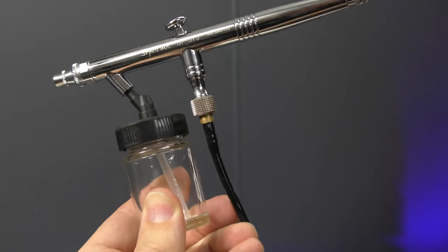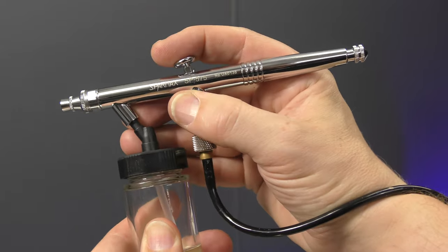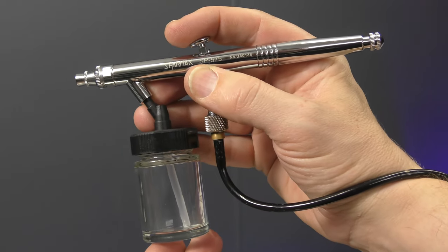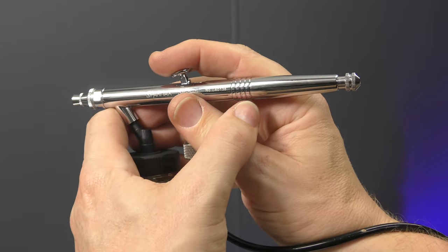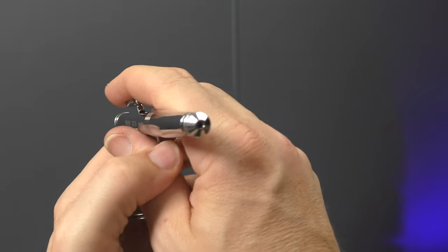And now with the suction feed brush, same deal. I hook that hose around my wrist, I find it a bit more comfortable. But with the suction feed you've got this jar which I like to hold on to and that'll give me a nice steady grip.